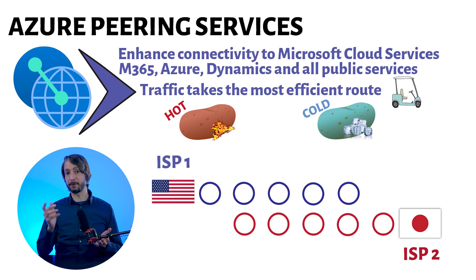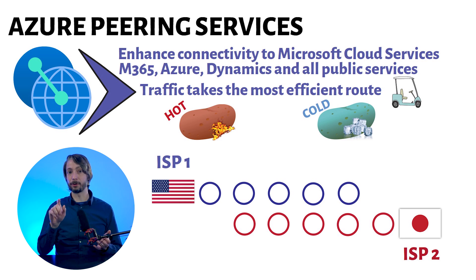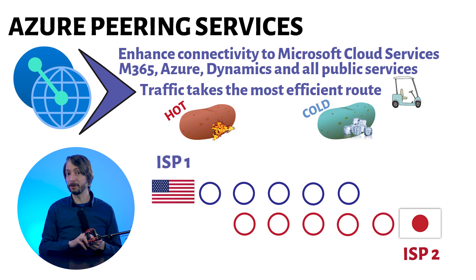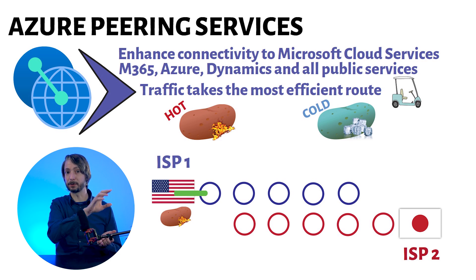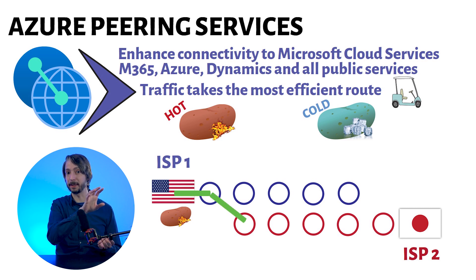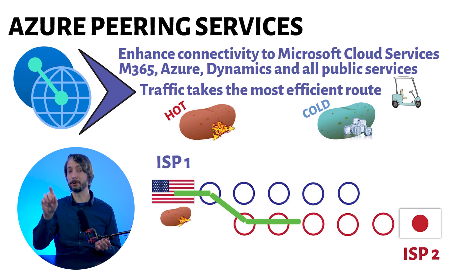Now, if a network packet needs to travel from the US to a service hosted by the Japan ISP, there are two ways to handle this. One, it can be handled as a hot potato. So when the packet starts at the US, much like holding a hot potato, the ISP will try to get rid of it as soon as possible. They immediately transfer the packet to the Japan ISP network in the US, and from there it travels through its own global network to the destination.